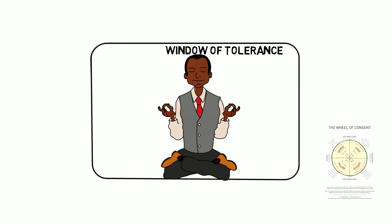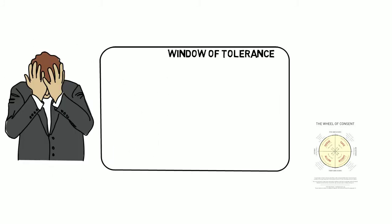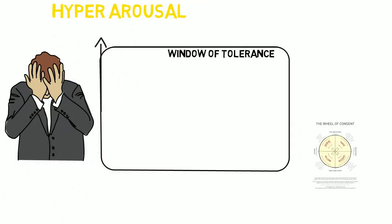The stress of a traumatic or negative event may have the effect of pushing a person out of their window of tolerance. People who have experienced a traumatic event may respond to stressors, even minor ones, with extreme hyper or hypo arousal.